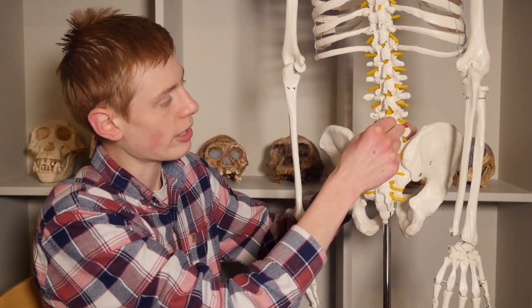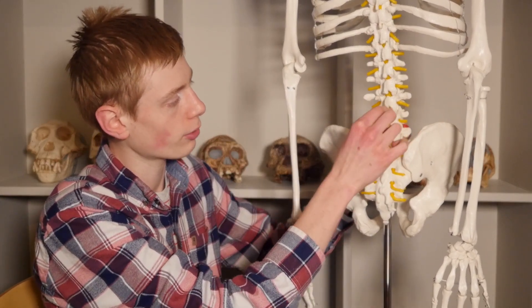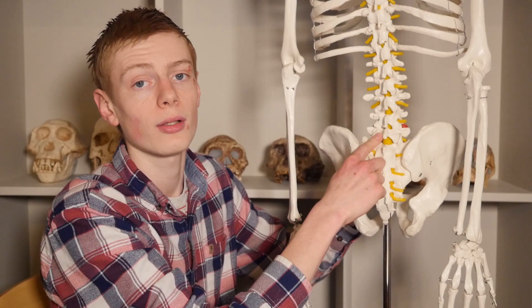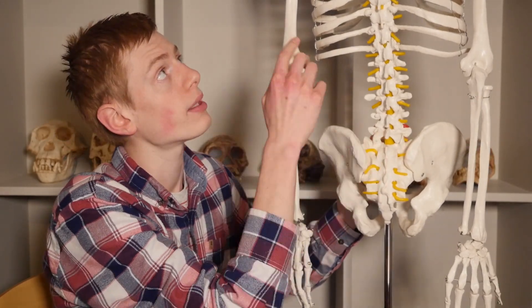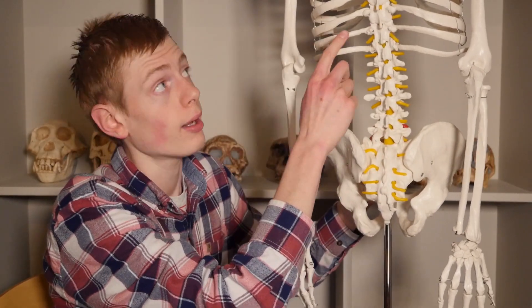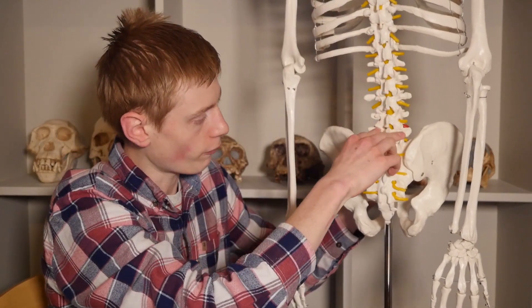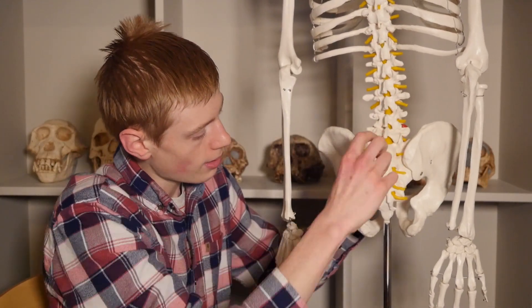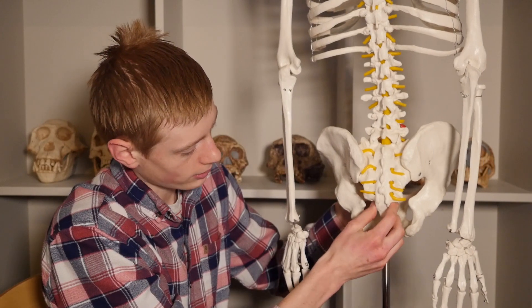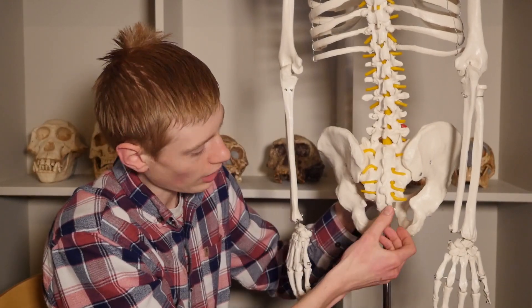Now, right in this region here, we have these particular vertebrae that are called lumbar vertebrae. Up at the top, you have cervical vertebrae, then this section is thoracic, and then you have your lumbar vertebrae, and then your sacrum, and then your coccyx, and a few other things which make your tailbone.